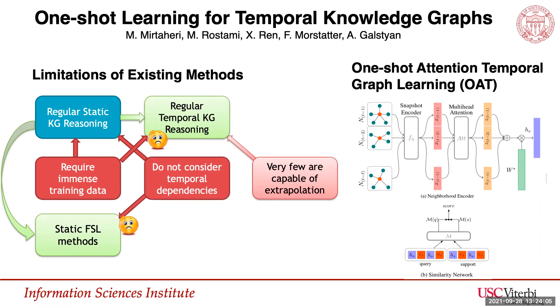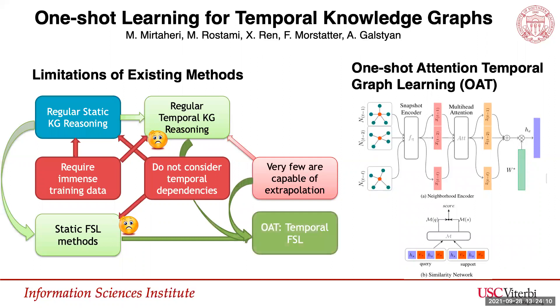In this work, we propose a method for predicting new events for unseen relations and unseen timestamps in temporal knowledge graphs when there is only one training example for each relation.